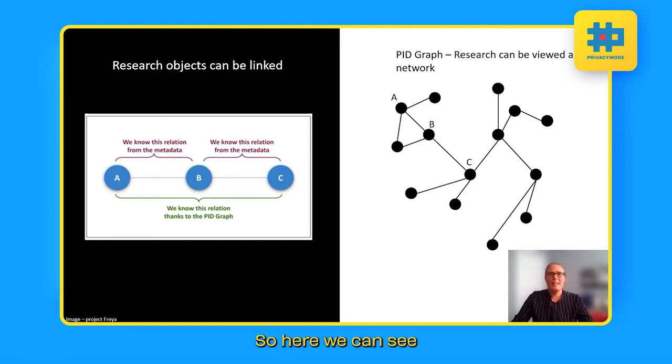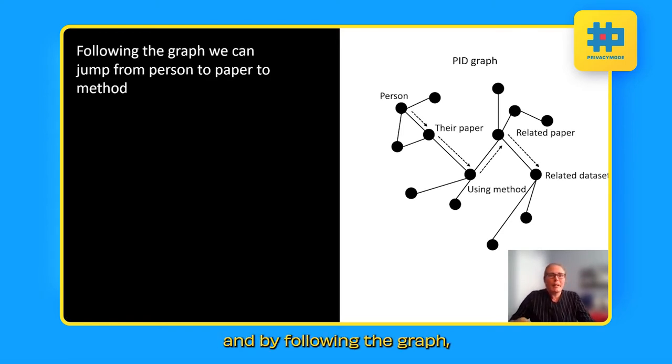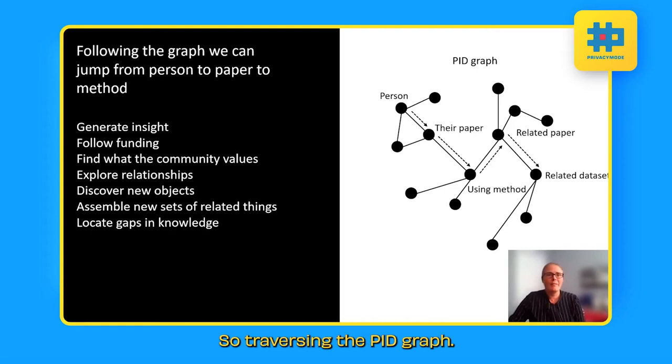A PID graph is that we can view a network of the relationship between objects that are generated in research. So here we can see A, B and C in that example, and I've extended the graph. And by following the graph, the idea is that we can jump from, say, a person to their paper and their methodology, finding therefore a related paper and related datasets. So traversing the PID graph and there are many benefits to being able to do this.